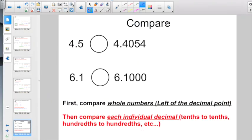Okay, time to go and compare some decimal numbers. Remember, first compare whole numbers. Here I have the whole number 4, and here I have the whole number 4. So it's a tie so far. Then you compare each individual decimal number. You don't look over here and say 4,054 is way bigger than 5. You have a 5 in the tenths place. You have a 4 in the tenths place. 5 is greater than 4. So 4 and 5 tenths is greater than 4 and 4,054 ten-thousandths.